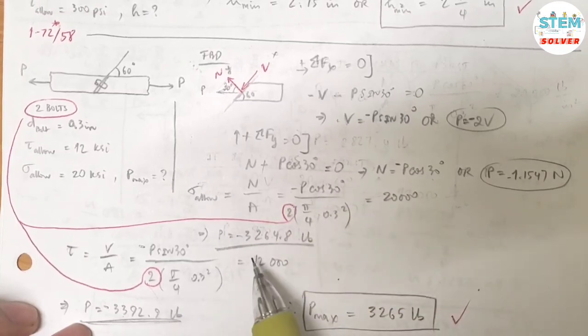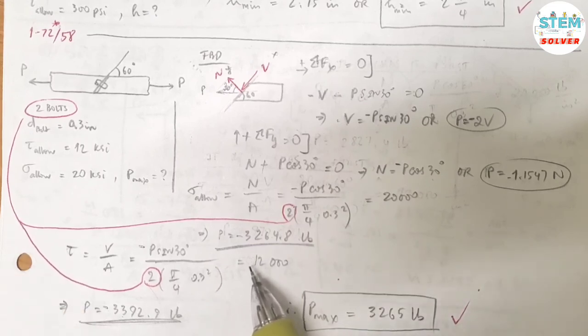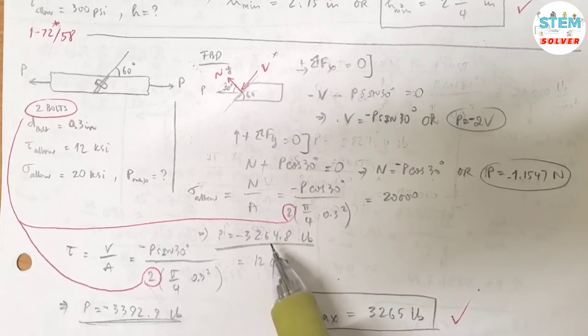So your maximum P is 3,265 pounds. Because it reaches this force and it will fail the normal stress, and there's no way it can reach this shear stress because it's already failed.